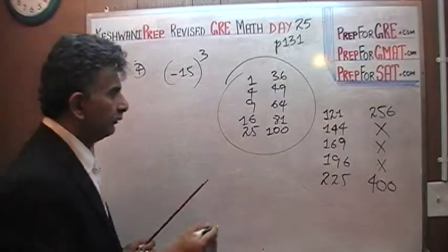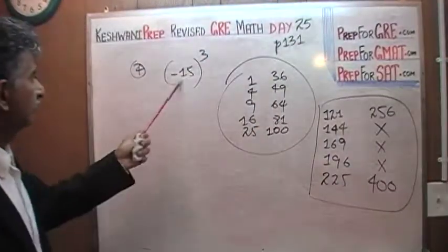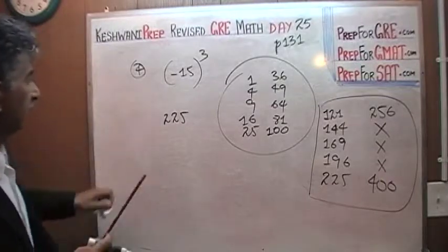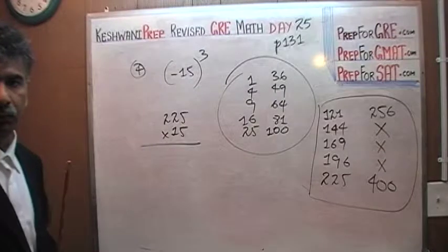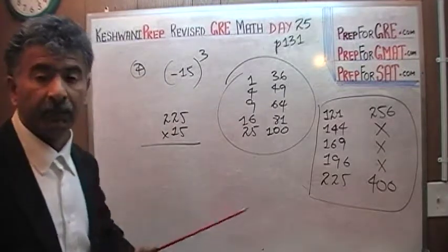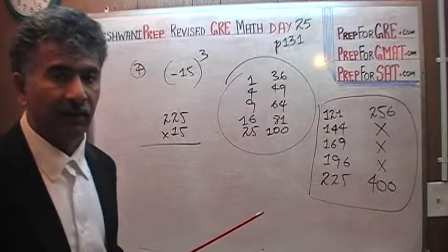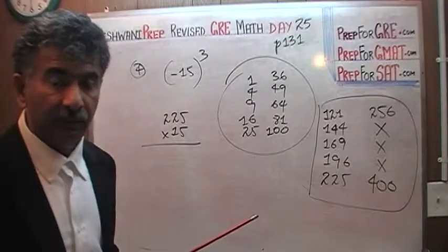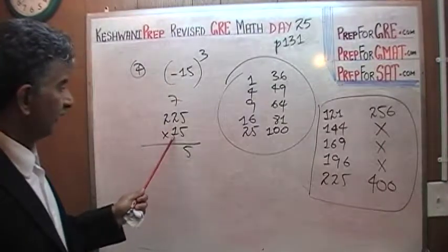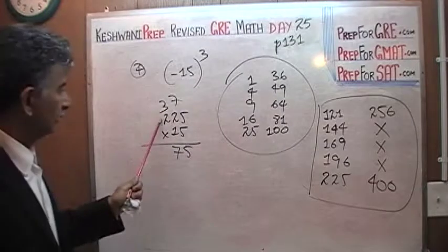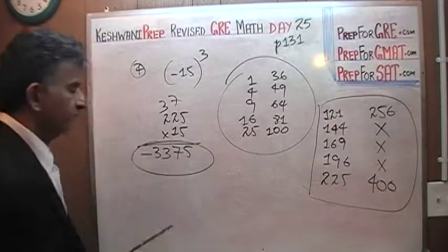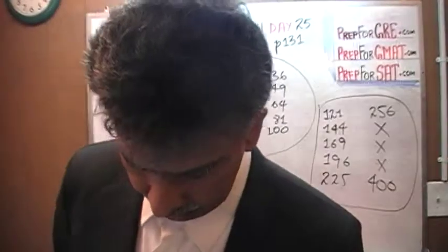If you know your squares, you can also compute cubes. For example, if you know 15 squared is 225, take 225 and multiply by 15. Five fifteens: well, ten fifteens are 150, so five fifteens are 75. Then carry through the multiplication — 2 times 15 is 30 — and you get your answer without needing the calculator at all.